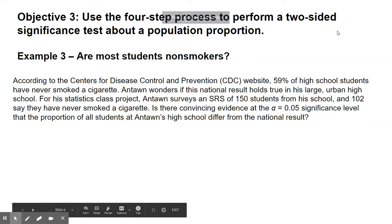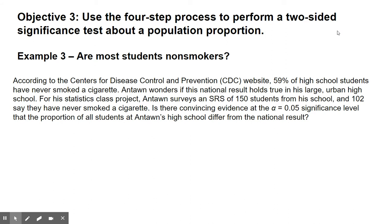Objective three, the four-step process for a two-sided test: are most students non-smokers? According to the Centers for Disease Control and Prevention website, 59% of high school students have never smoked a cigarette. Anton wonders if this national result holds true in his large urban high school. For a statistics class project, Anton surveys an SRS of 150 students from his school and 102 say they have never smoked a cigarette. Is there convincing evidence at the alpha equals 0.05 significance level that the proportion of all students at Anton's high school differs from the national result?